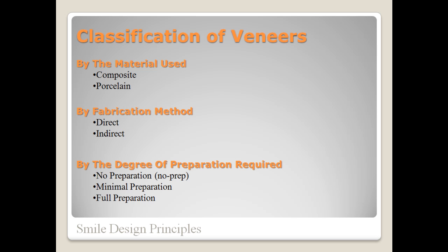I will try not to bore you with a lot of basic information, but a good starting point is the classification of veneers. Veneers can be classified by the materials they are made of, such as composite or porcelain; the method of fabrication, direct or indirect; and the degree of preparation required, with three levels: no prep veneers, minimal prep veneers, and full prep veneers.